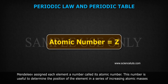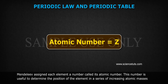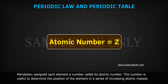Mendeleev assigned each element a number and called it atomic number. This number is useful to determine the position of the element in a series of increasing atomic masses.